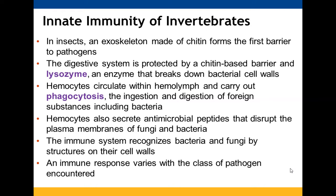Insects' digestive system is protected by a chitin-based barrier containing lysozyme, which helps break down bacterial cell walls. Because their blood is not separate from their lymph, hemocytes circulate throughout the hemolymph and carry out phagocytosis. They also secrete proteins with antimicrobial properties that help break down plasma membranes of fungi and bacteria, recognizing them by structures found only on their cell walls.